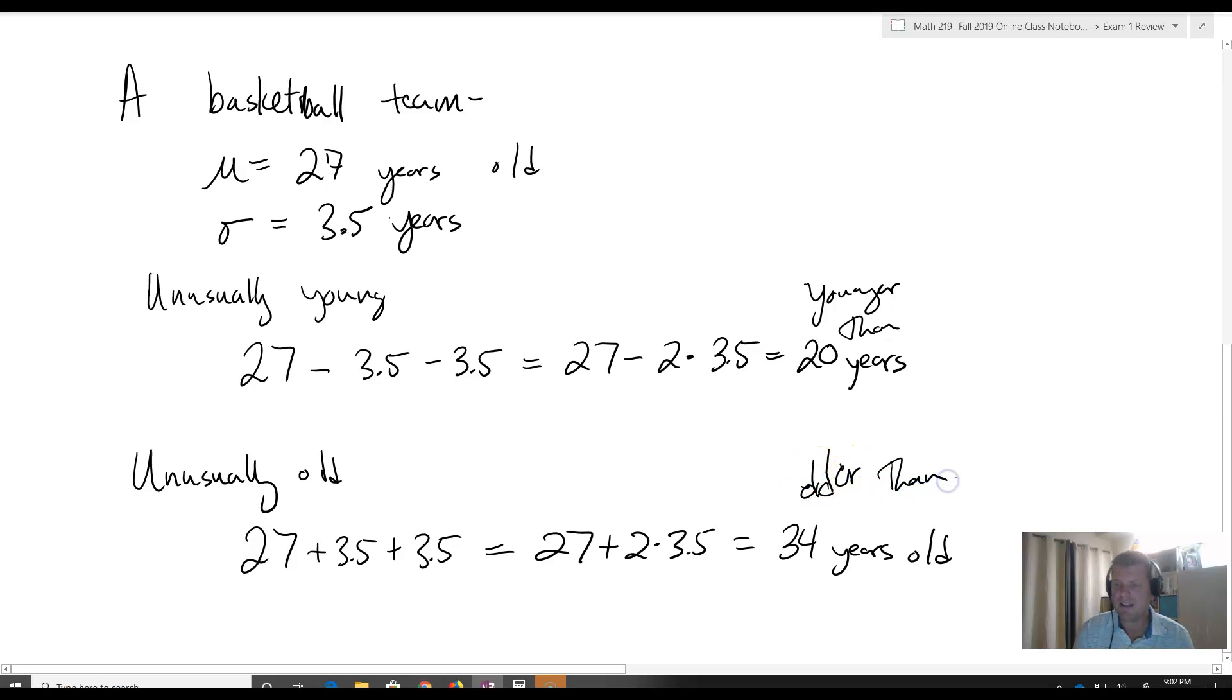If we asked whether somebody who was 28 was actually unusually young or old, the answer would be no, because they are not more than two standard deviations away from the mean. Consequently, we would not consider them to be unusually old.